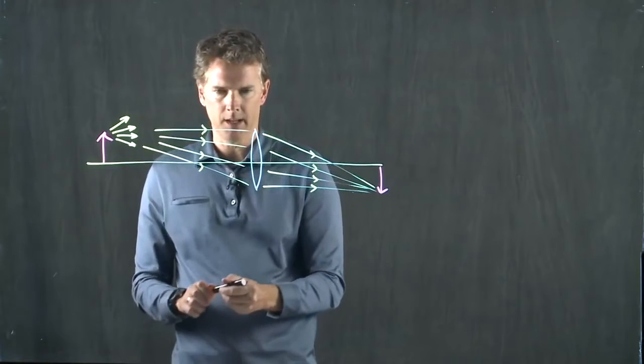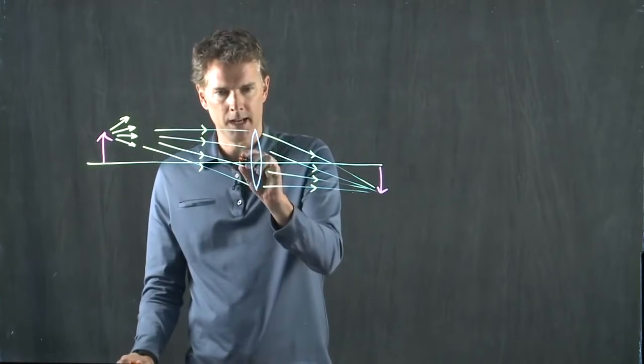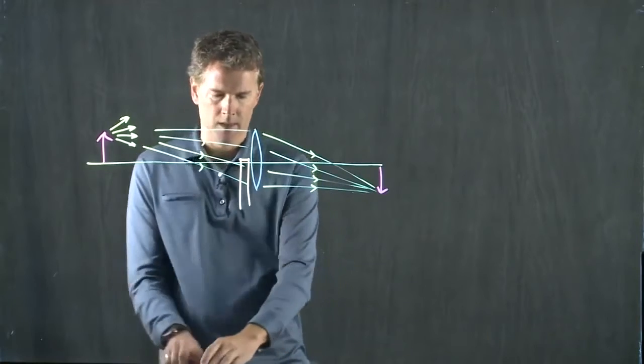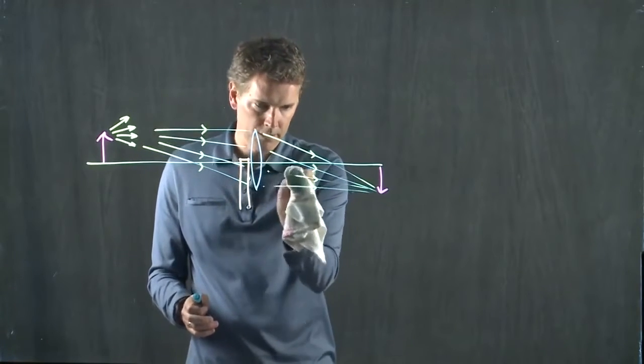But if I block half of the lens, if I take an aperture and I just cut those out, then these last two are gone.